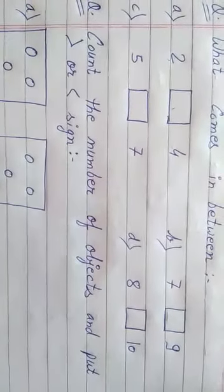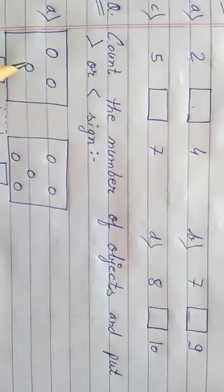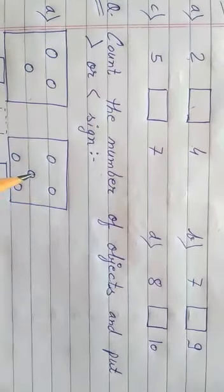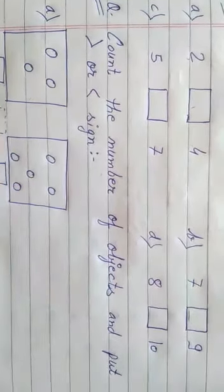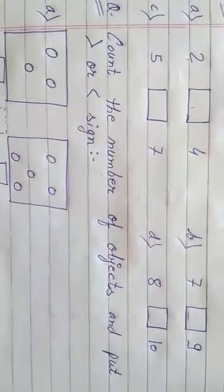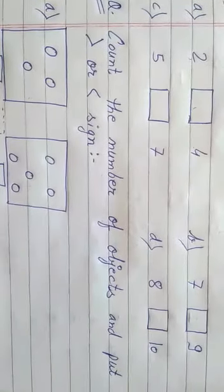Look at the next question: count the number of objects and put the sign. You have to first count the objects, then put the sign for greater than or less than. Count: 1, 2, 3. In the next group: 1, 2, 3, 4, 5. Which one is greater? Put the sign. You have to do all these questions in your notebook.